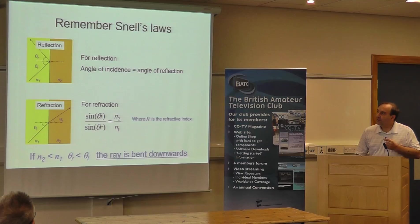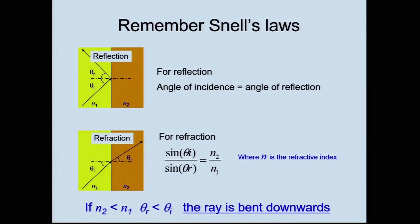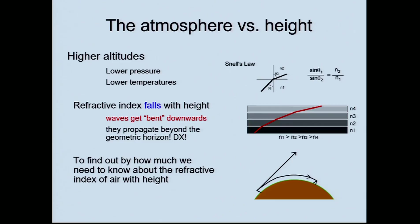Then refraction. Does anyone remember Snell's laws — how lenses and prisms work? When you have a reflection in a mirror, the angle of reflection equals the angle of incidence. For refraction, it depends on the difference in refractive index and the angle of incidence — that's how a lens works. The good thing from our point of view is the way the atmosphere varies with height. As you go up, the pressure drops, less gas, and the temperature also falls. The refractive index of the air reduces as you go up, and the impact of that is that waves get bent downwards — bent over the horizon. And that's what gives us tropo DX.